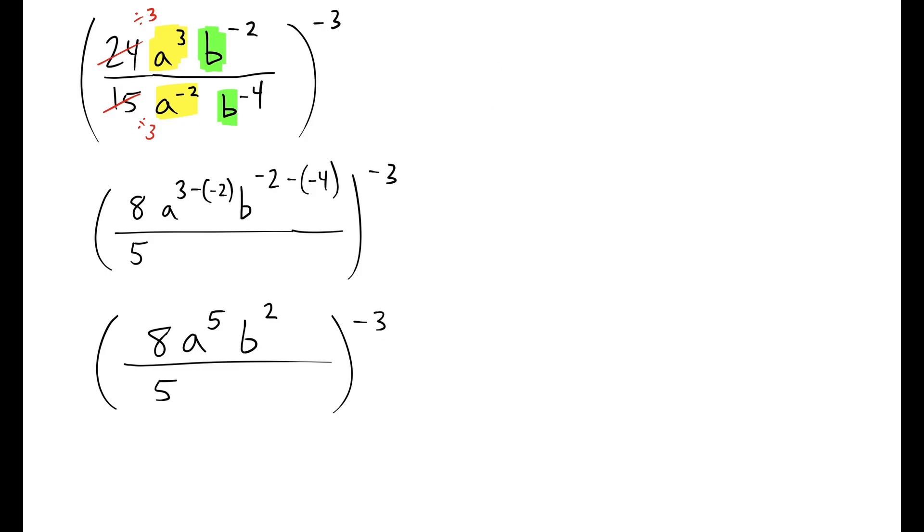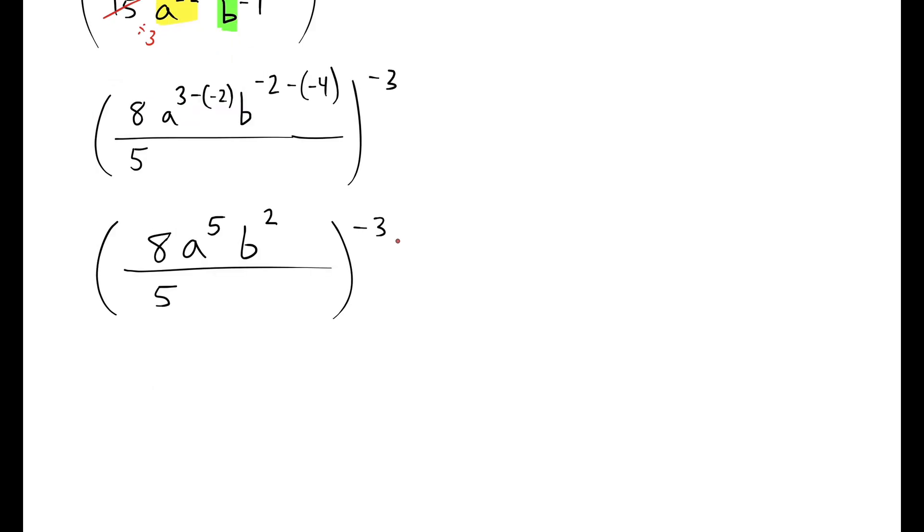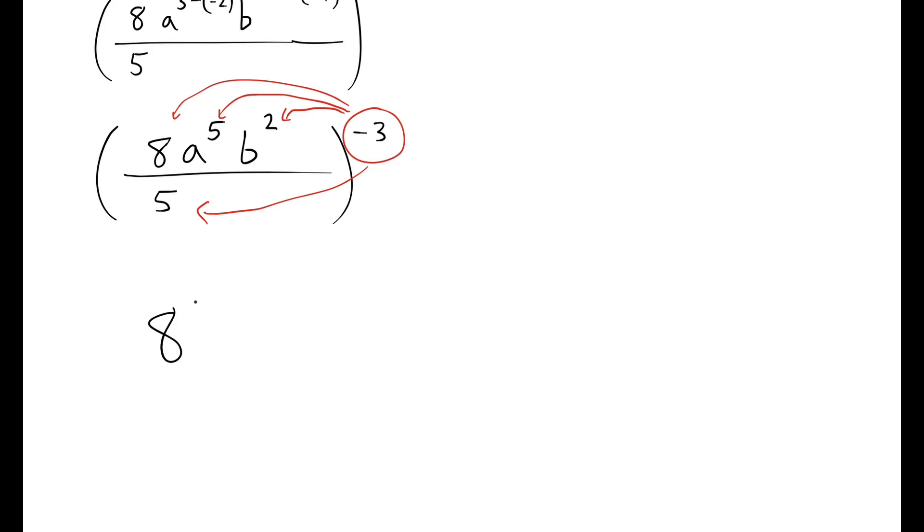Now the inside of the parentheses is completely simplified. So now I have to apply the negative 3 power to all entities inside the parentheses. So it gets sent to everybody: 8 to the negative 3, A to the 5 to the negative 3, B squared to the negative 3, all over 5 to the negative 3.